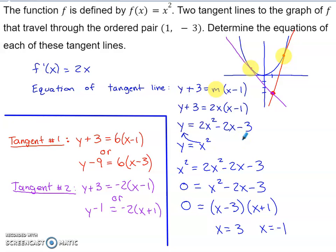Here's the whole linchpin of this strategy. This has to be true in order for this point to be on our tangent line, in order for the point 1, negative 3 to be on our tangent line.